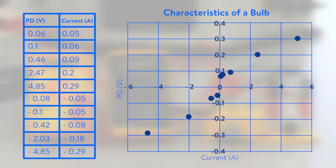The points on the graph are joined up through the origin of the graph. This line shows the characteristic of a filament lamp and shows that it is a non-ohmic conductor which does not have a constant resistance and therefore does not obey Ohm's law.